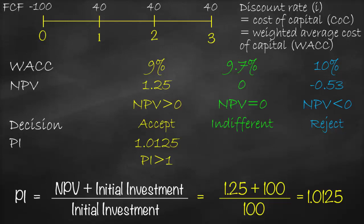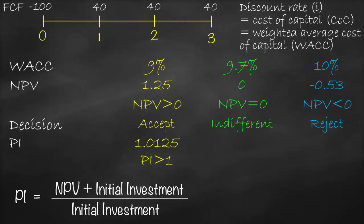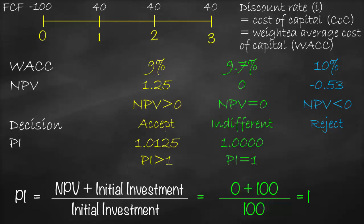Please note that if NPV is bigger than 0, profitability index must be bigger than 1. The benchmark for net present value is 0 because we subtract initial investment from the present value of future cash flows, while the benchmark for profitability index is 1 because we divide the present value of future cash flows by our initial investment. For the second scenario where WACC is 9.7%, our profitability index is equal to NPV of 0 plus initial investment of 100 divided by 100, which gives us 1. Therefore, our decision rule is profitability index equals 1, so we will be indifferent. Please note that if NPV is equal to 0, profitability index must be equal to 1.